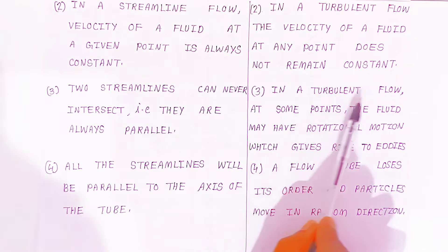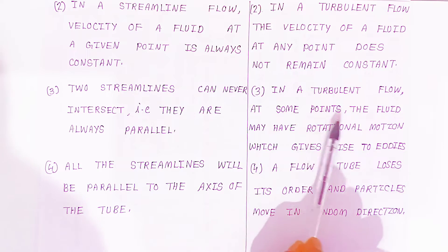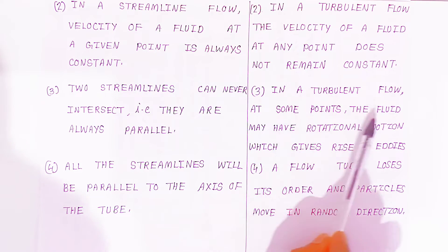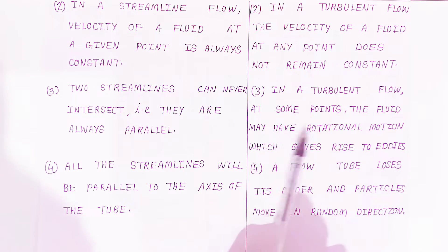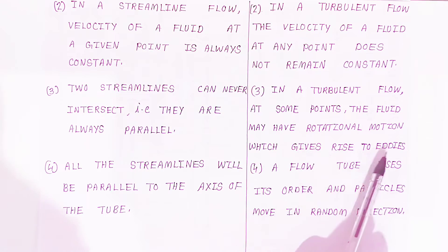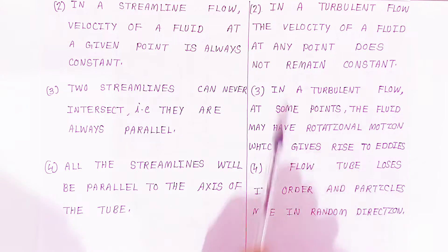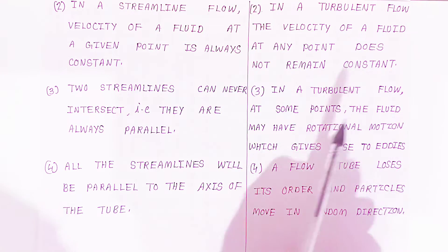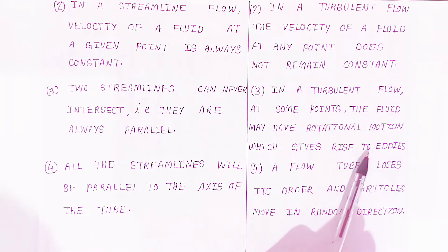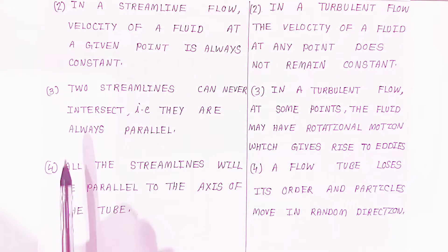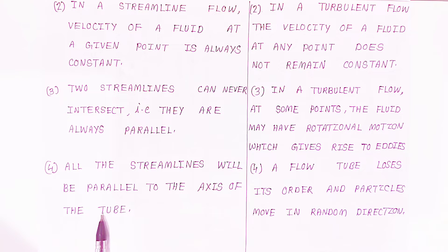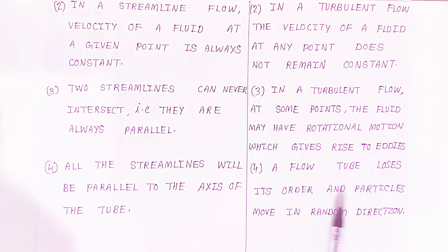In turbulent flow, the fluid may have rotational motion which gives rise to eddies. All the streamlines will be parallel to the axis of the tube in which it is flowing. In turbulent flow, the flow tube loses its order and particles move in random directions.